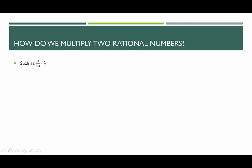The example we're going to go with is 3/14 times 7/9. First we're going to simplify any common factors between the numerator and denominator. While there is another method where we could multiply across first and then simplify, I find this to be better because we get to deal with smaller factors, and this is also what we want to do when multiplying rational expressions.